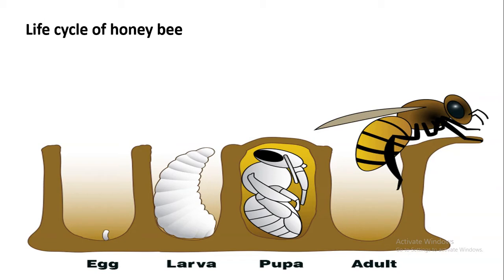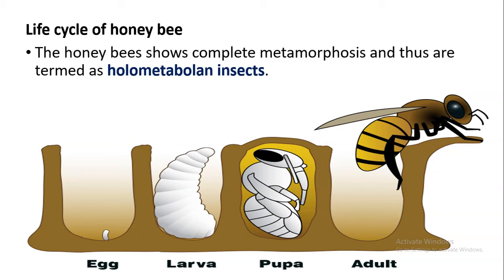Hello students and welcome. Today's topic is the life cycle of the honeybee. Honeybees undergo complete metamorphosis. There are a number of phases seen in their life cycle: egg, larva, pupa, and then adult stages. There is a complete change in morphology throughout their life cycle, and this process is called metamorphosis.